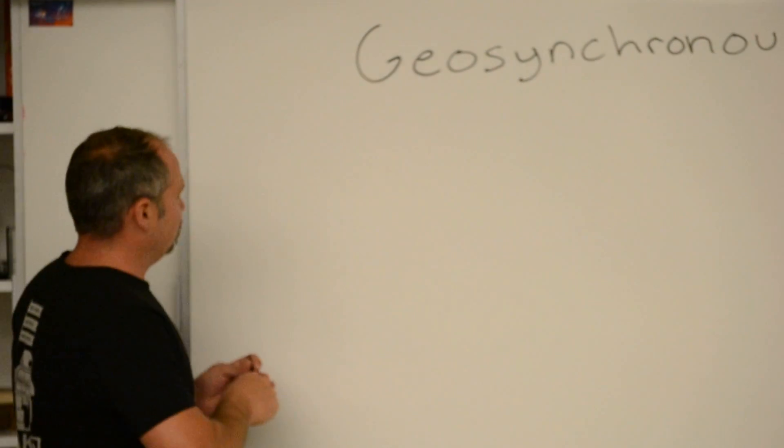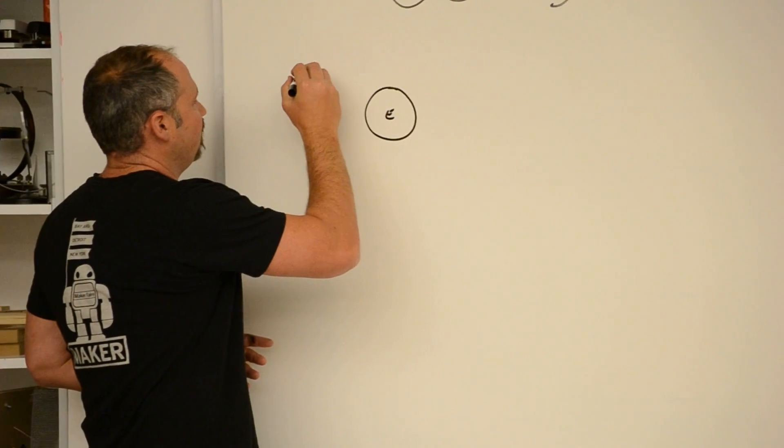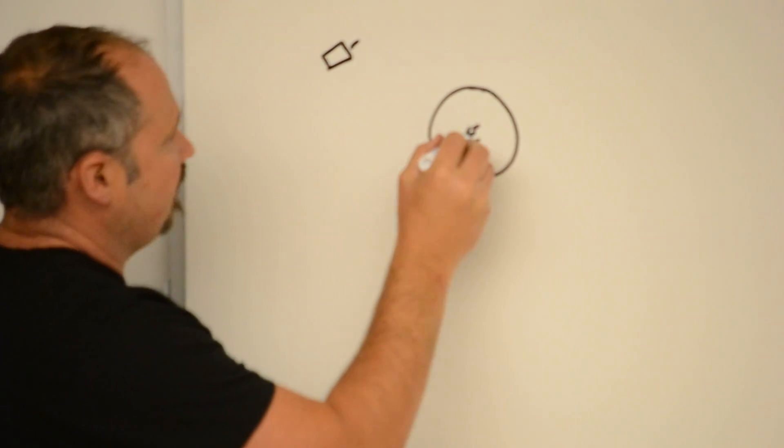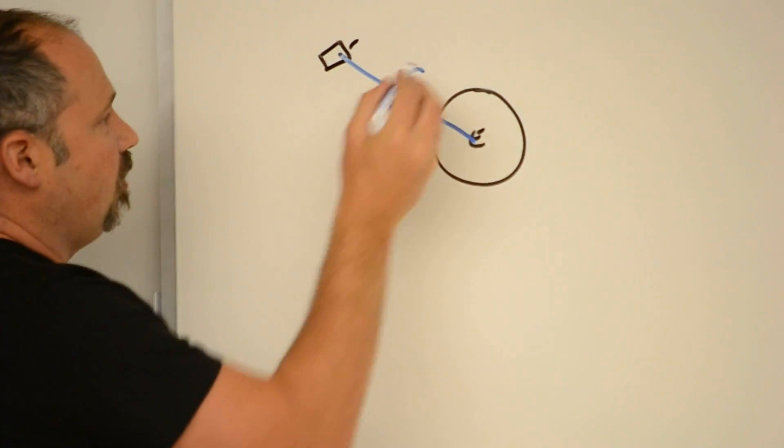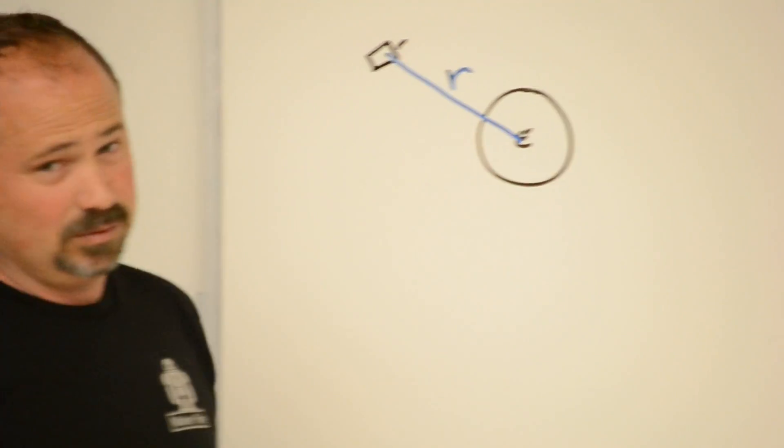So let's first draw a little picture. So here's Earth. Here's Bender, his antenna. And let's let this be the distance r. That's the distance between the two objects from the center of mass of Earth to the satellite.